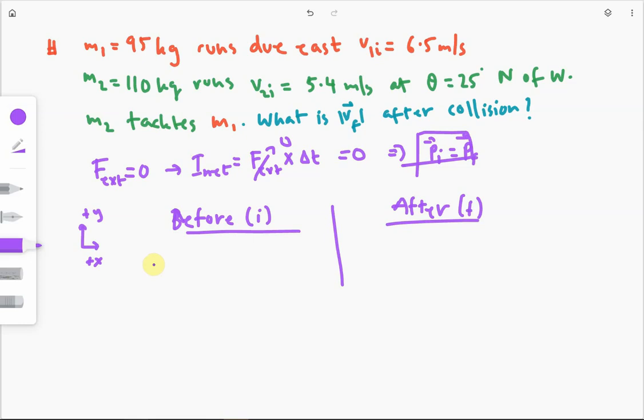So, initially, what did we have? We had M1 running due east in this direction with a speed of V1 initial. And then, we had M2 running north of west in this direction, making an angle of 25 degrees with the west. So, this is what we had in our question.